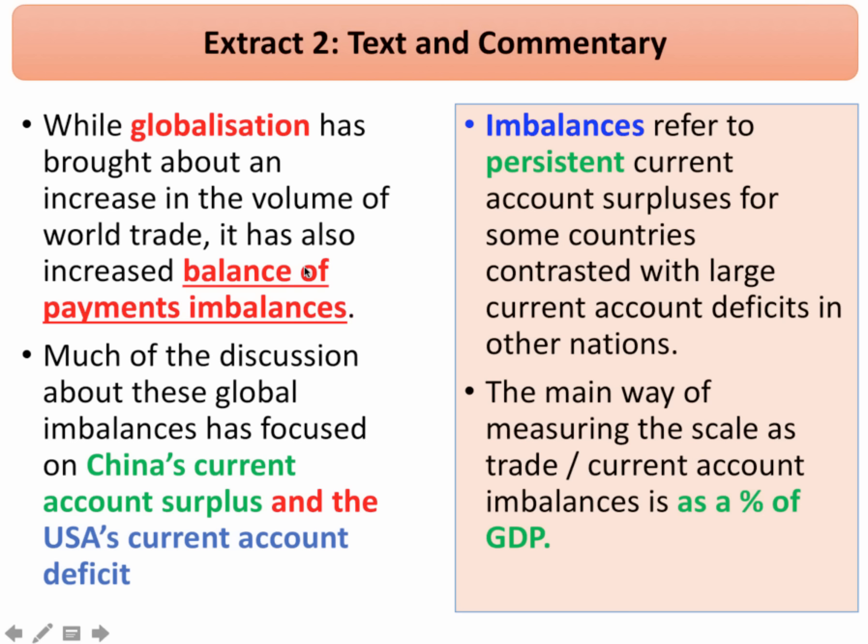The extract is really clear and it's important to focus on some of the phrases here. Globalisation has increased the volume of world trade, although the growth of world trade has slowed down in recent times. But we've also seen an increase in trade imbalances — a growing divide between surplus countries and deficit countries — and this is one of the factors that's caused the rise of protectionist sentiment in many parts of the world.